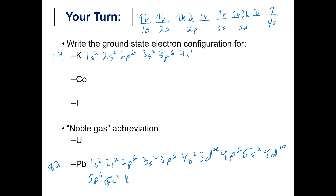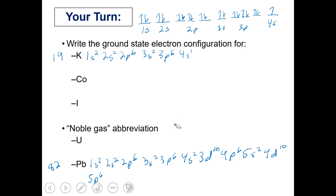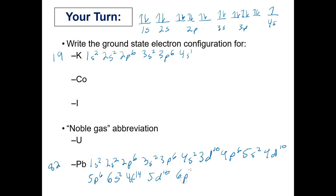Continuing lead's configuration: 6s², 4f¹⁴, then 5d¹⁰ brings us to 80 electrons, which means two electrons remain to go into 6p², completing the full configuration for lead.